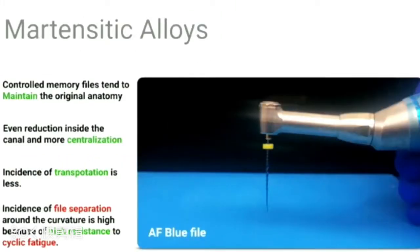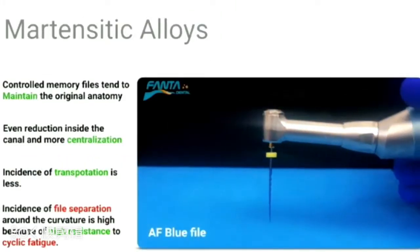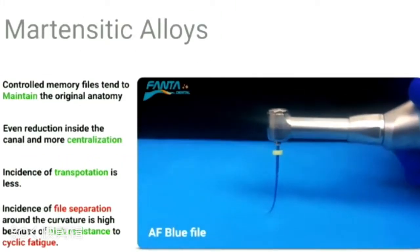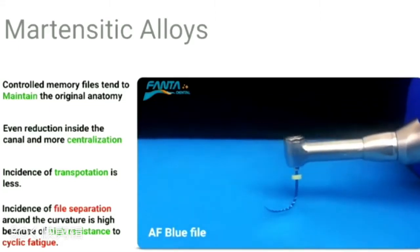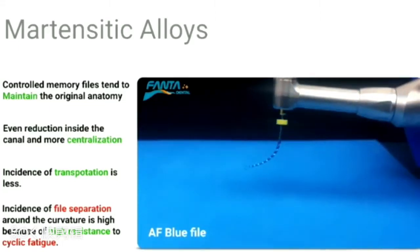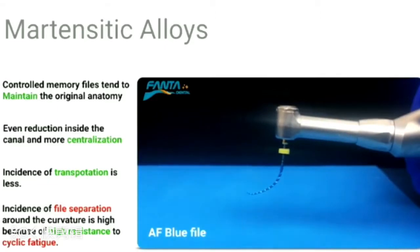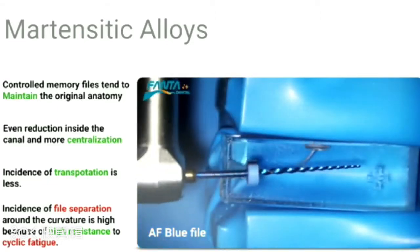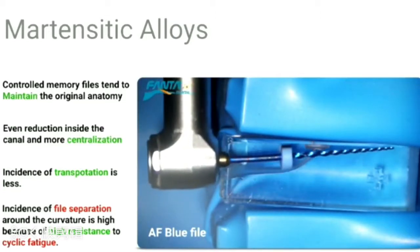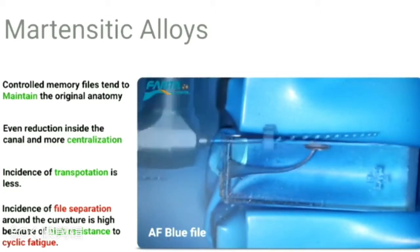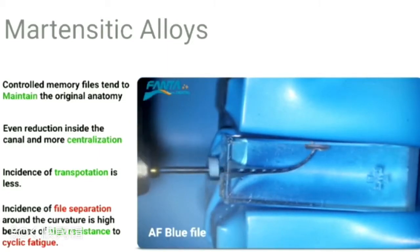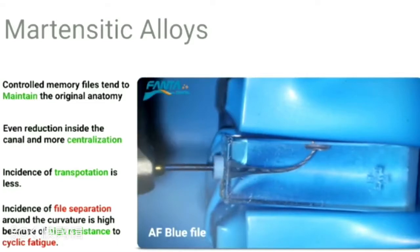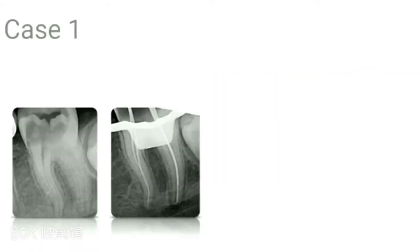With the presence nowadays of martensitic files, the files are more resistant to cyclic fatigue and torsional fatigue. These files can go through curvatures with less incidence of separation while maintaining the original anatomy of the canal. This is an AF Blue file from Fanta — a controlled memory file that will remain in the canal without causing stress, maintaining the original anatomy with less incidence of separation.